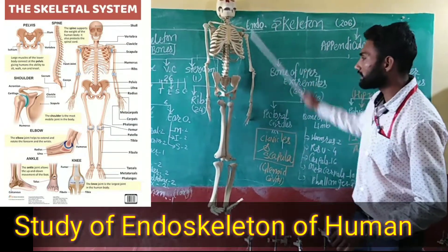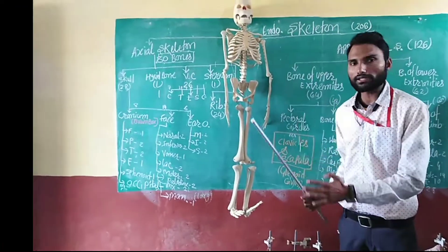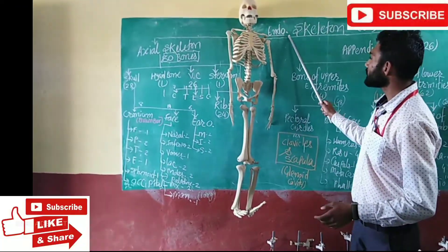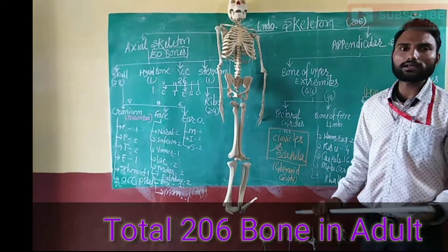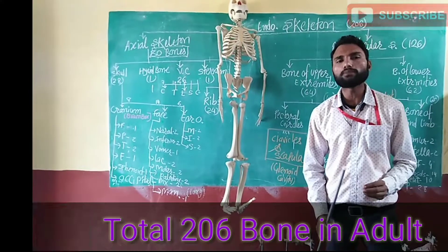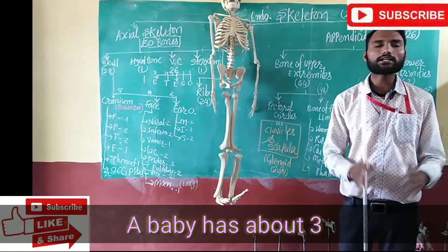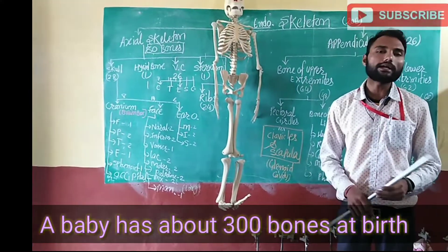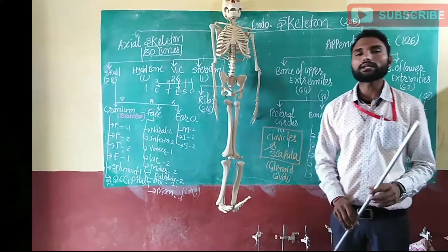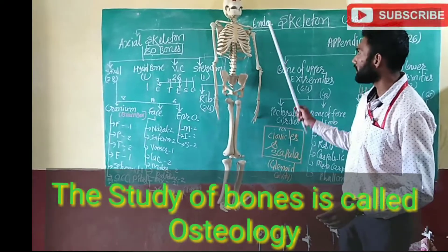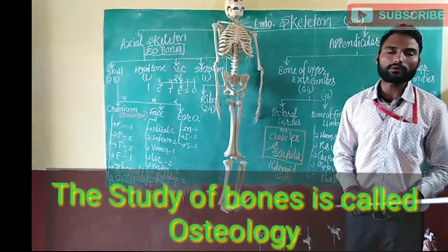When we talk about the human body, the internal structure of the body and the size of the body is called the human skeleton. When we talk about the endoskeleton, it has a total of 206 bones. When we talk about the infant, the newborn baby has a total of 300 bones, and the remaining adult bones are 206.